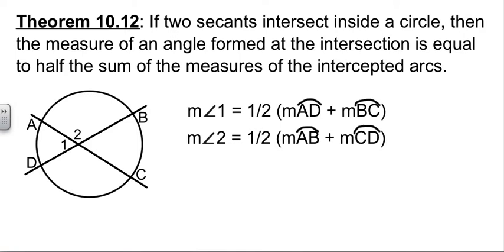If we have two secants intersecting inside the circle, then we're going to get some angles. We're going to get four of them, but we're really only interested in two because this angle will be the same as this one by vertical angles. Two will be the same as this angle by vertical angles.